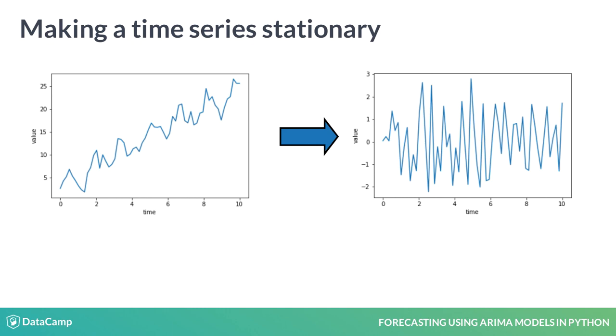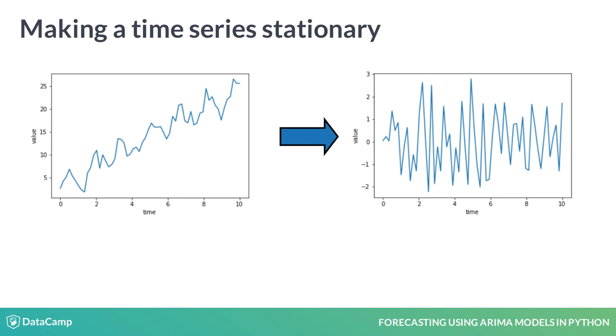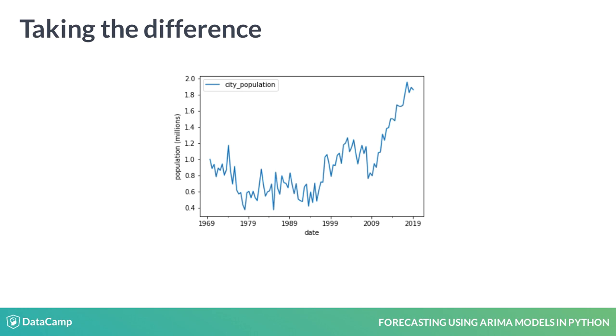So, let's say we have a time series that is non-stationary. We need to transform the data into a stationary form before we can model it. You can think of this a bit like feature engineering in classic machine learning. Let's start with a non-stationary dataset. Here is an example of the population of a city.